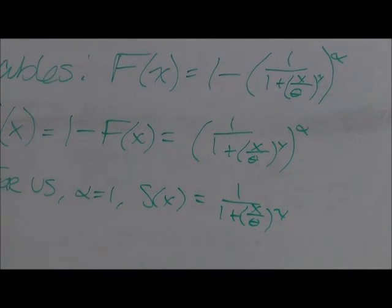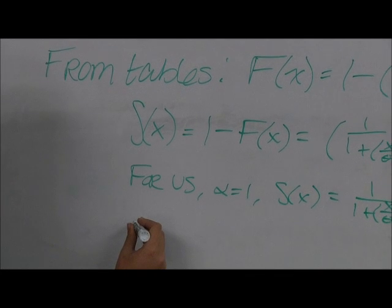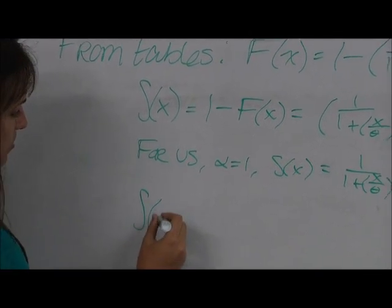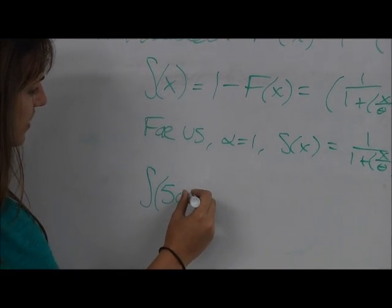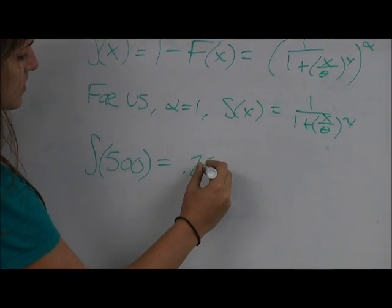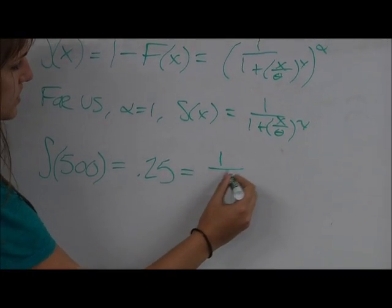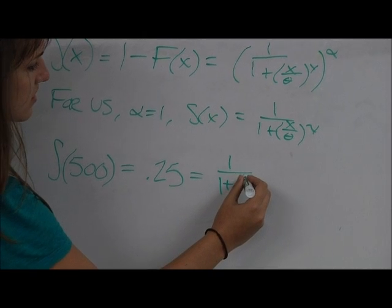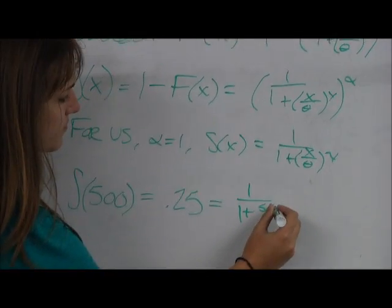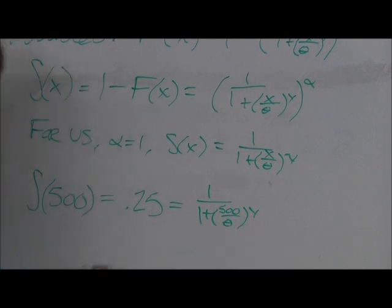So let's set up our system of equations. We have the following. We have that 25% of our values are greater than 500, which means that S of 500 is equal to 0.25, which means that 0.25 is equal to 1 over 1 plus 500 over theta to the gamma.